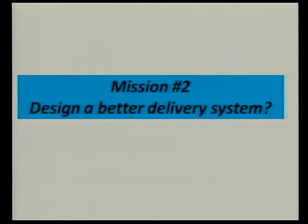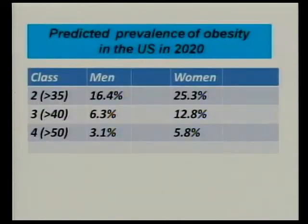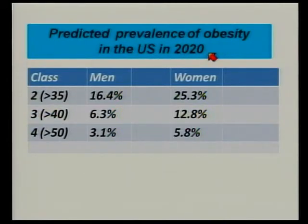And the second mission is we need to design a better delivery system. Let me give you some data. Even though I'm a cartoonist, I thought I'd show this to you — let me put it in cartoon terms, much easier to understand. Look at this: the predicted prevalence of obesity in the United States at 2020, these are CDC figures.